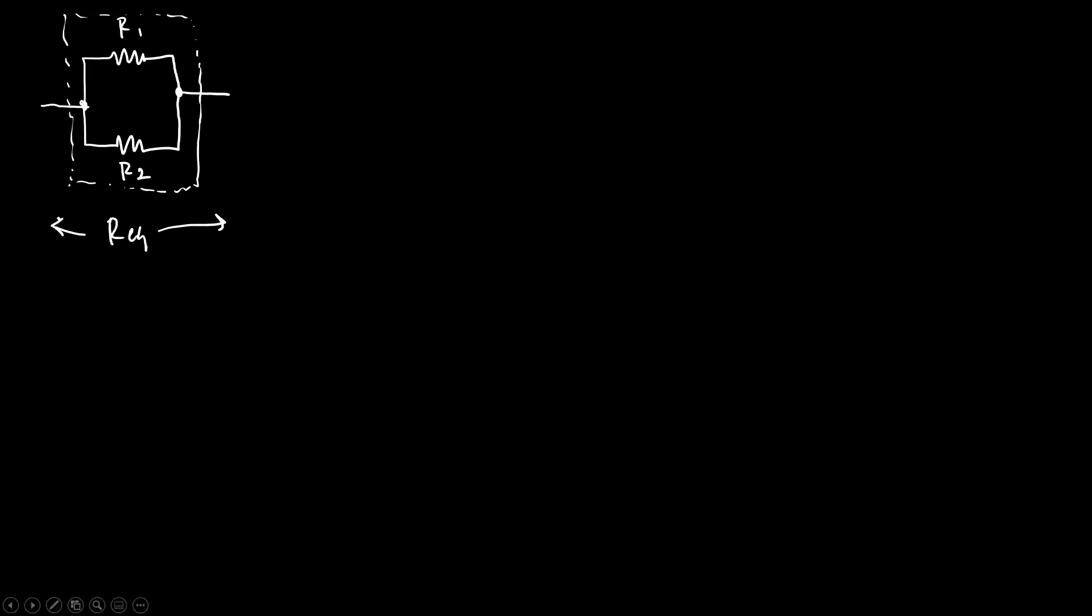Resistances in parallel add inversely. So what I mean by that is that the equivalent resistance is calculated using this equation: 1 over Req equals 1 over R1 plus 1 over R2.